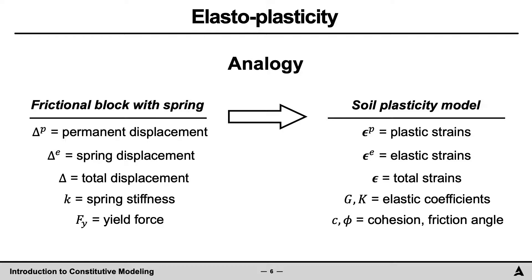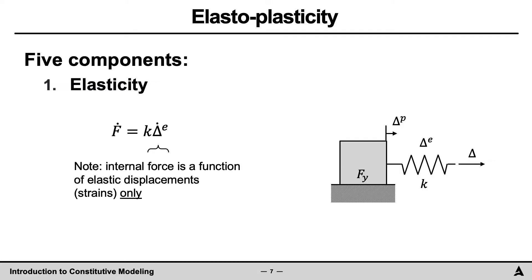Using this block example, we will now discuss in greater detail each of the five items of an elastic plastic model. First, elasticity. Elasticity refers to the response of the spring. A critical item to note here is that the change in the forces, an analogy for the change in the stresses, relate directly to a change in elastic displacement. For example, for this block, the time derivative of force is equal to the stiffness of the spring times the time derivative of elastic displacement.